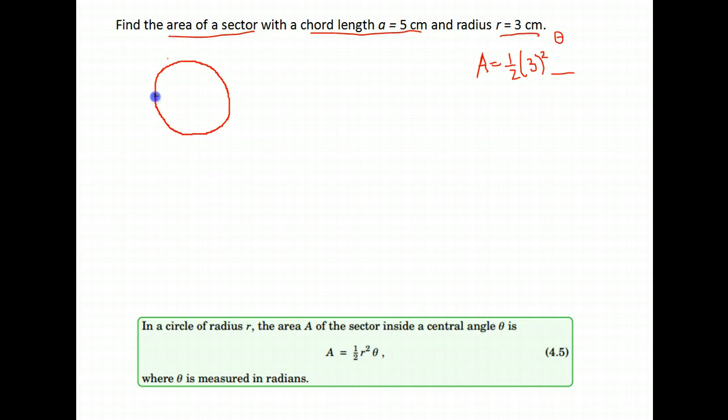So first let's remind ourselves what a chord is. From geometry, a chord is a line segment with endpoints on the circle. So it goes from one point on the circle to another point. It's a straight line segment.